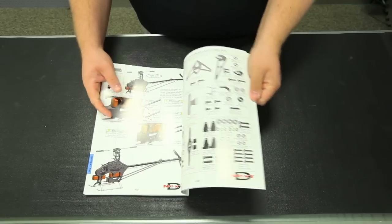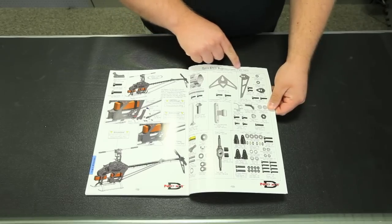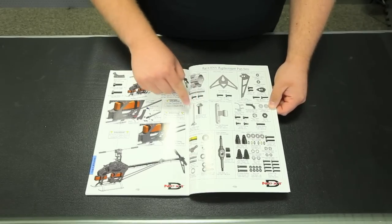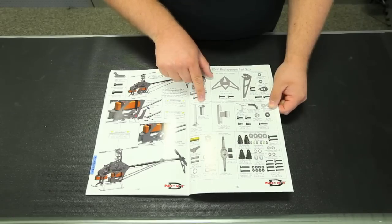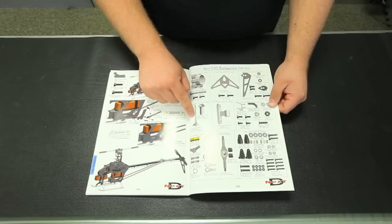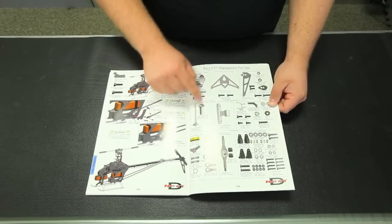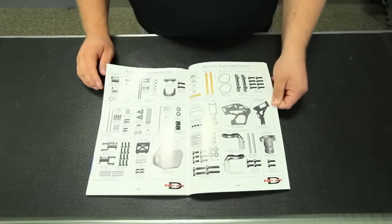However, this time included with the manual is a back section here. It's the Rave ENV replacement parts set list. Basically what it's going to do is, it's going to tell you what number to order, such as this right here, NDYR-AS1004. And packaged in that bag are the two components as shown inside the square area. It should be pretty helpful when you go to reorder your rave parts.